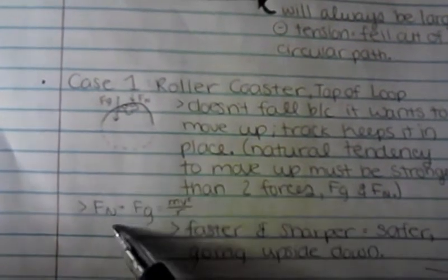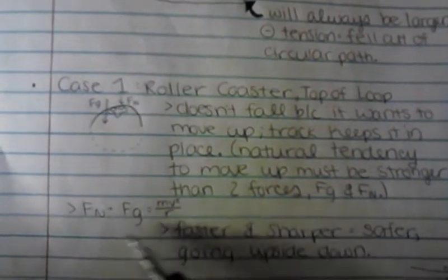The faster you go around the circle, the faster and sharper, the safer you are. And it's a lesser chance of going upside down. So you want to go faster going around the loop.